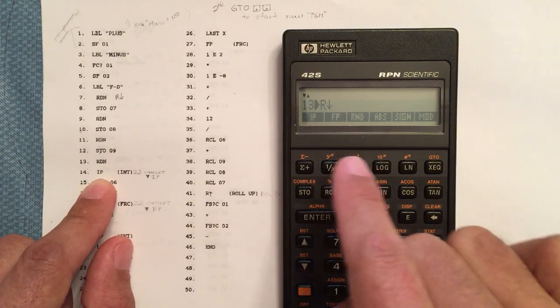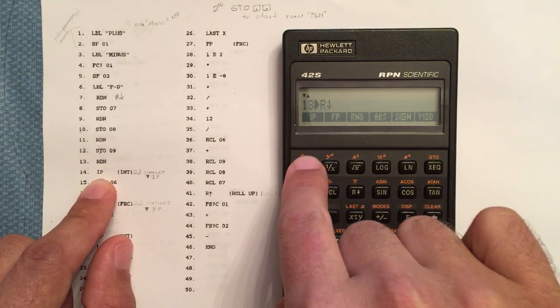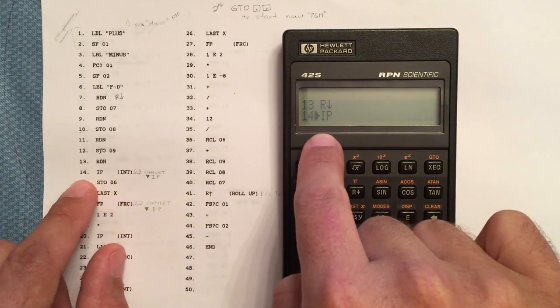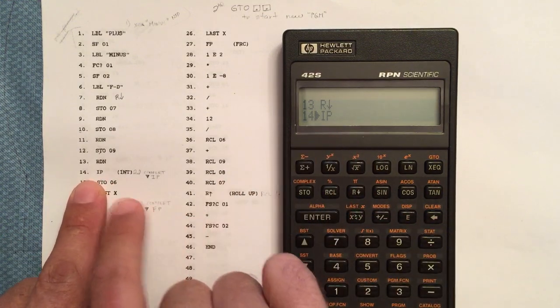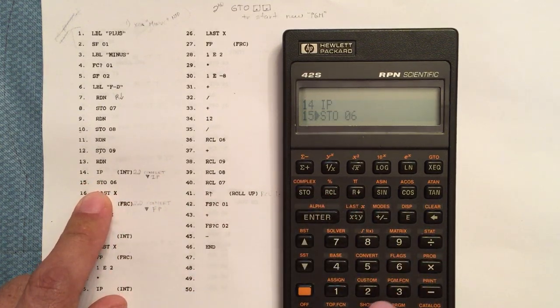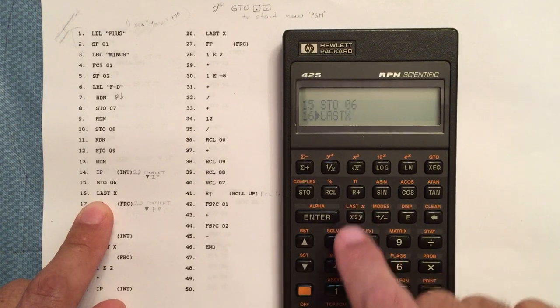Just to match up, I'm on line 14, line 14 in the program. Here I'm going to store 06, take the last X, take the fraction portion.